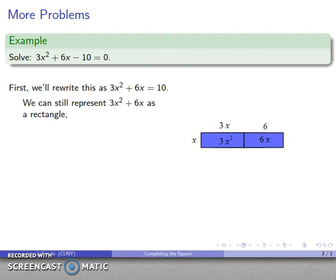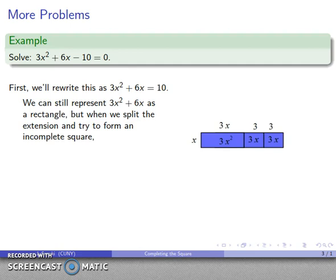If I don't think about what I'm doing, I might try to complete the square as follows. Ignoring the picture for a second, I'll take half of this 6x, split it in half, and slide that extension over to complete the square.